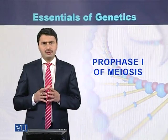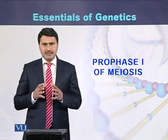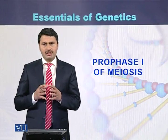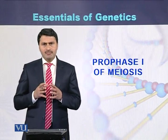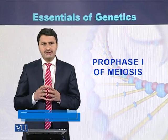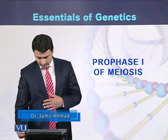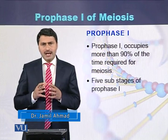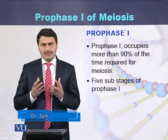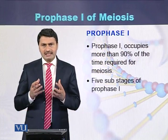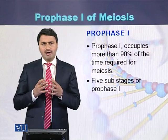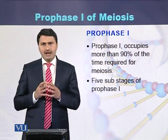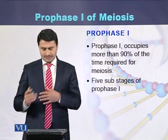Prophase I of meiosis, also called Prophase I of Meiosis I by some researchers and geneticists. Prophase I occupies more than 90% of the time of the meiosis cell cycle. Prophase I consists of five sub-stages.